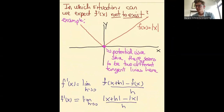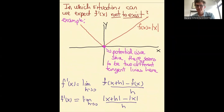The problem that, if you look, for example, at the absolute value of x — this may have an issue at the origin. At the origin, there seem to be two potential tangent lines. So that could be an issue, and we're going to check that using the limit definition of the derivative.